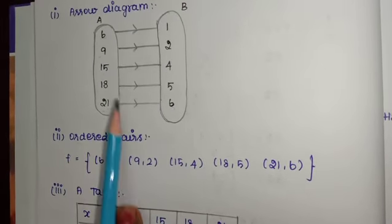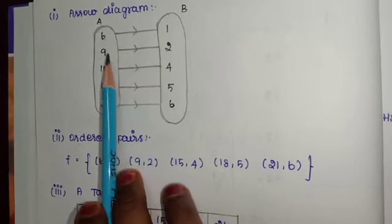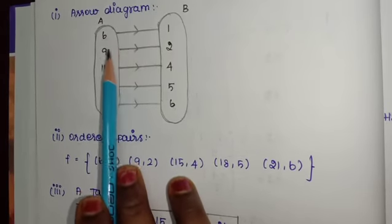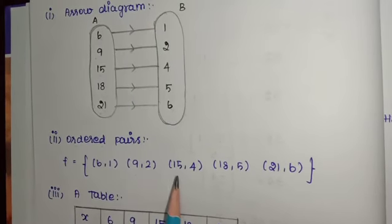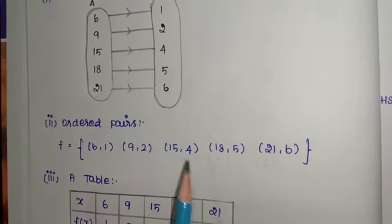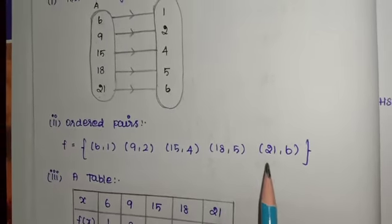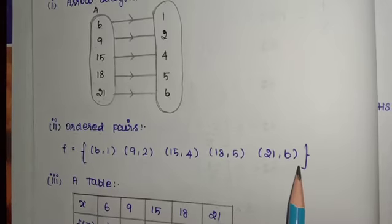Next, the ordered pairs. Write them as: (6, 1), (9, 2), (15, 4), (18, 5), (21, 6).